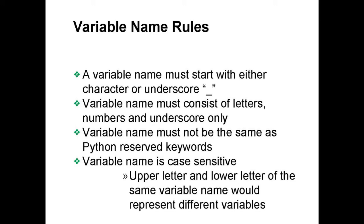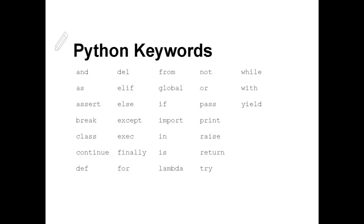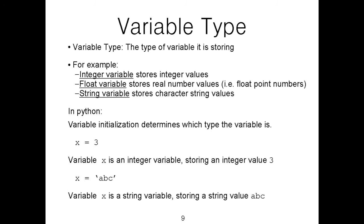Variable names are case sensitive, so an uppercase variable is a different variable from a lowercase one. You can use any length for a variable name — you can have a really long name or a very short name. These are the list of Python keywords that you cannot use as a variable name; these are reserved words.